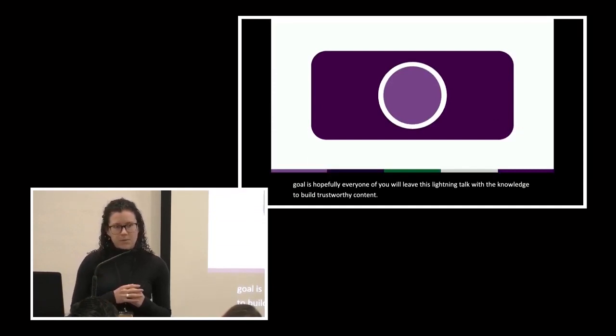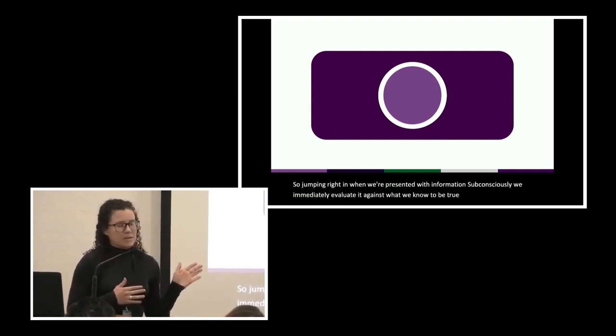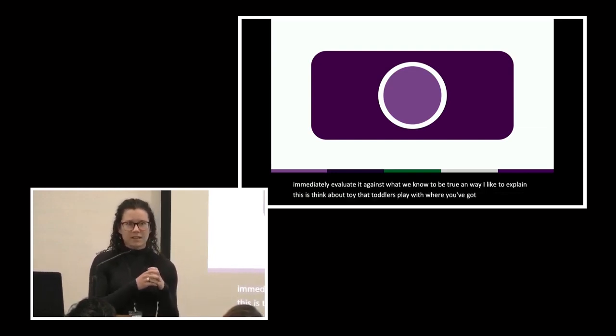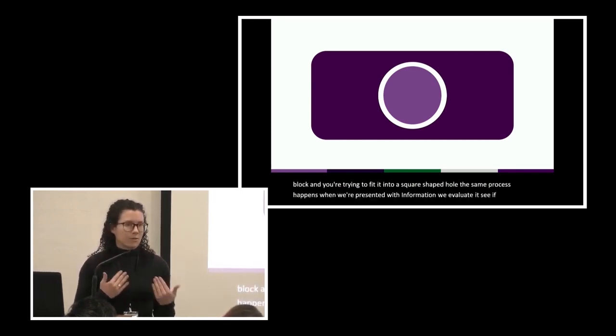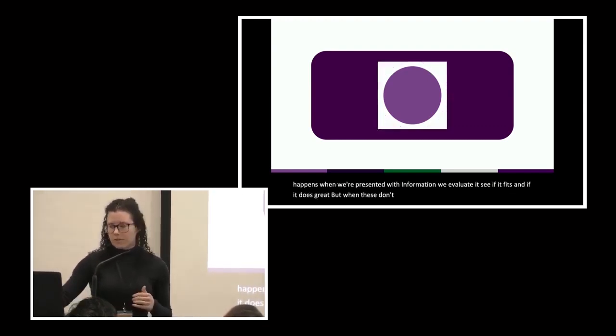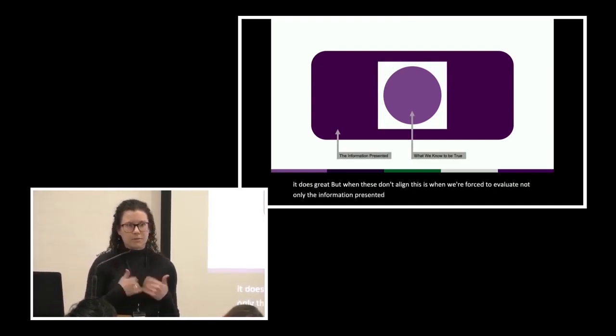Jumping right in: when we're presented with information, we subconsciously and immediately evaluate it against what we know to be true. A way I like to explain this is think of that toy toddlers play with — a cube-shaped block you're trying to fit into a square-shaped hole. The same process happens when we're presented with information: we evaluate it, see if it fits, and if it does, great. But when these don't align, we're forced to evaluate not only the new information but also the facts we already know to be true.